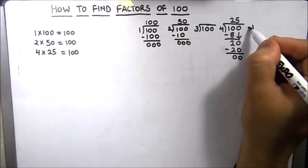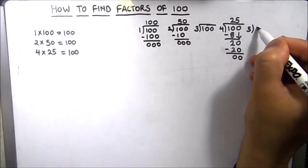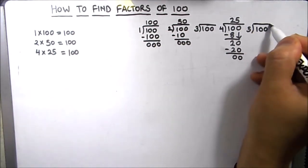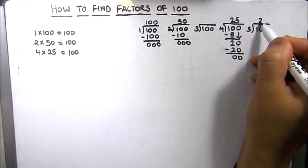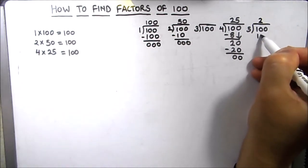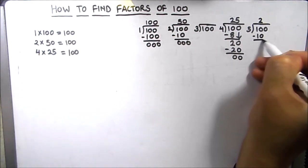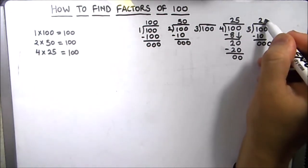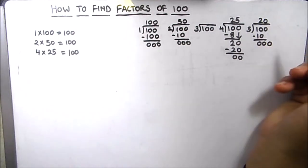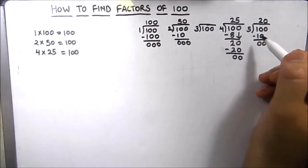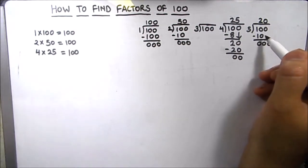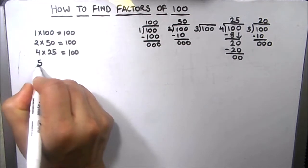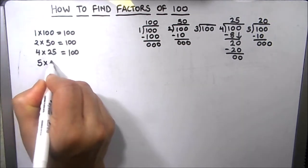Next we will divide 100 by number 5. 5 times 2 is 10 and 5 times 0 is 0, so 5 is a factor of 100. We got two factors: 5 and 20.